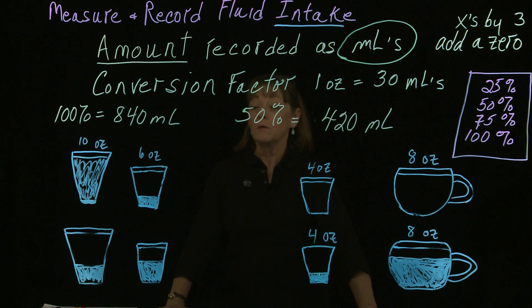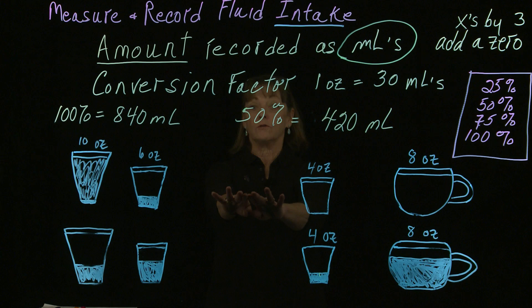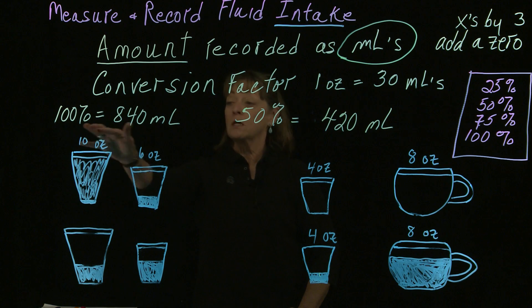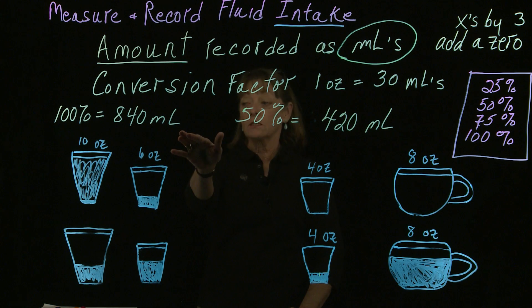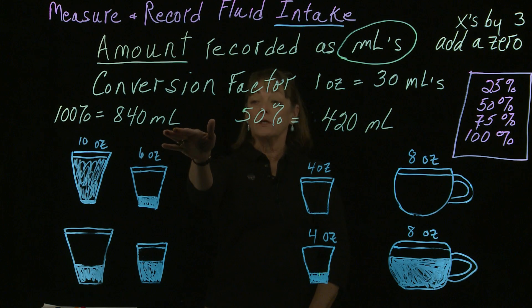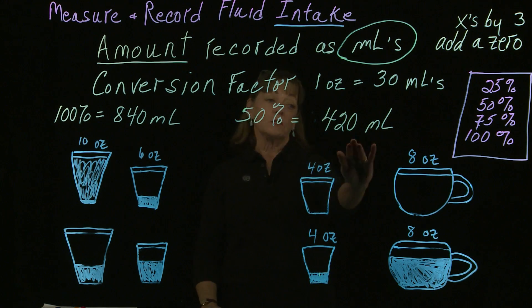In part one, we looked at all of these containers that were full because that's how they come out of the kitchen and are served to the person. So we calculated that 100% of the amount in these containers came out to 840 mLs, and 50% of that would be 420 mLs.